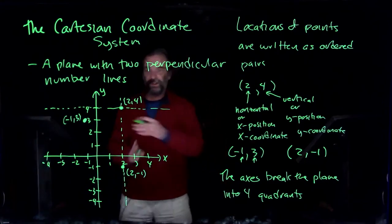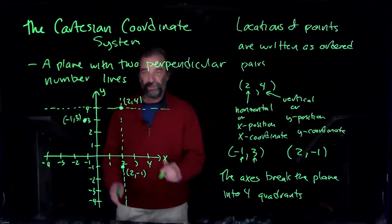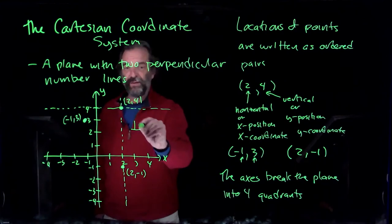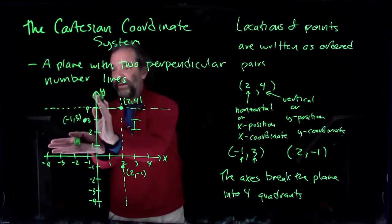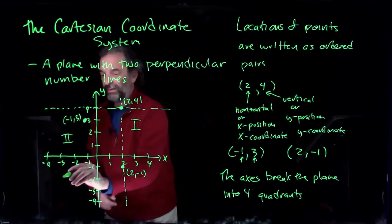You get quadrants when the axes cross at zero. We'll talk about this quadrant up here being the first quadrant, this one over here being the second quadrant, and so on around the clock.